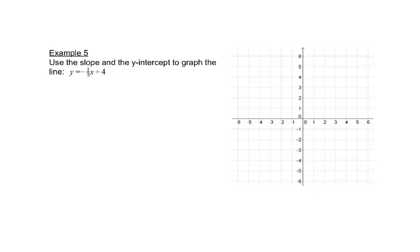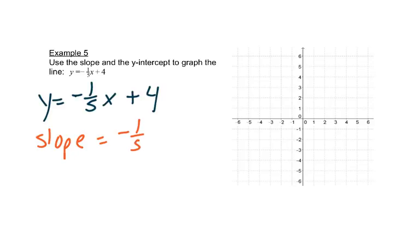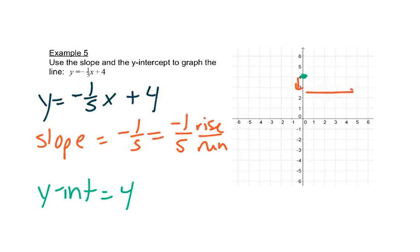We'll do the same idea here with this one. We have y equals negative 1 fifth x plus 4. So my slope is negative 1 fifth. Now we need to choose where that negative goes. It can go on the top or on the bottom, but not both places. I like to put it on the top so that I have a negative rise. And then my y-intercept is 4. So I'm going to start with 4 on the y-axis. And then from there my rise is negative, so I go down 1, right 5.